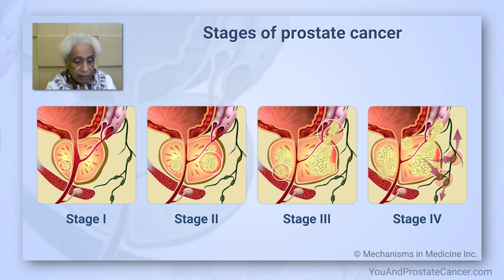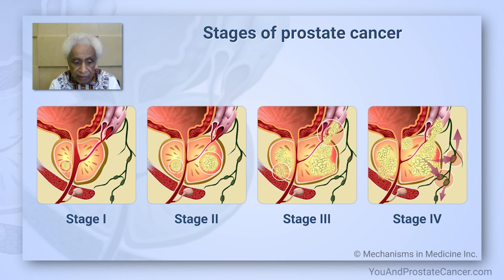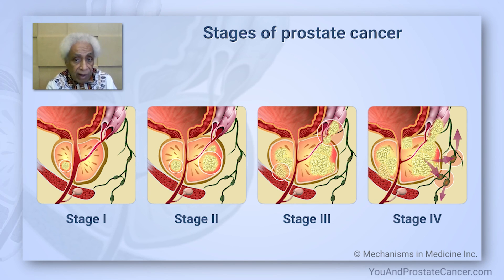So basically, the cancer is graded and described in terms of its aggressiveness — in terms of the grades, the grade group, and the Gleason score — and also how extensive it is.